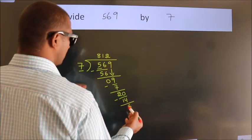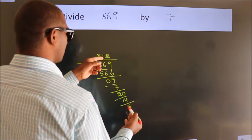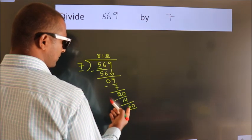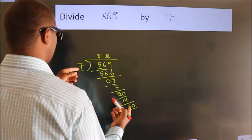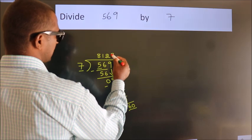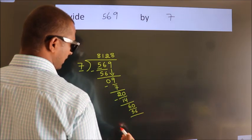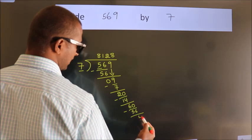After this, we already have the decimal. So directly take 0. So 60. A number close to 60 in 7 table is 7 8's 56. Now we subtract. We get 4.